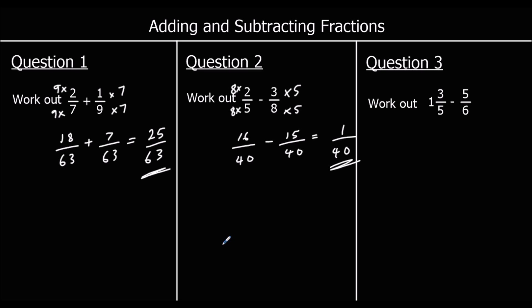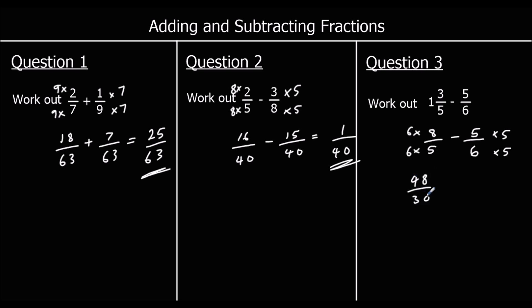For question three, we change the mixed number to a top-heavy fraction first. One whole one is five-fifths, and five-fifths plus three-fifths make eight-fifths. So we've got eight-fifths take away five-sixths. To subtract, we make the denominators the same — multiply top and bottom of eight-fifths by six, and top and bottom of five-sixths by five, making both denominators thirty. Eight times six is forty-eight over thirty, minus five times five which is twenty-five over thirty. Forty-eight minus twenty-five is twenty-three, so the answer is twenty-three thirtieths.